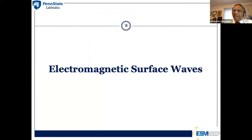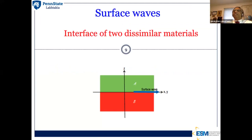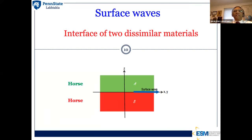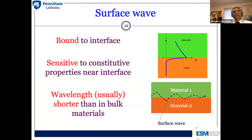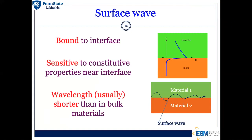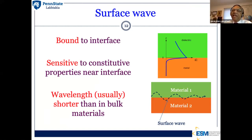That feat is exemplified by surface waves. A surface wave is a frequency domain entity whose propagation is guided by the interface of two dissimilar materials — both of these materials are horses of different colors altogether, and the interface is the fence. A surface wave is bound to that interface, sensitive to changes in constitutive properties near the interface, and its wavelength is usually shorter than in either of the bulk materials on either side.